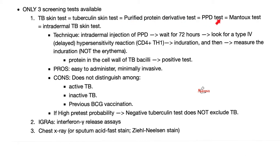The problem with the PPD skin test is it cannot distinguish between a patient with TB and a person who received the BCG vaccination. We also have the interferon gamma release assay. If you remember the previous videos, we talked about granuloma formation. How do you make a granuloma? You need the T lymphocytes to stimulate the macrophages.